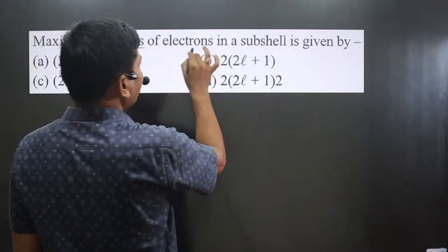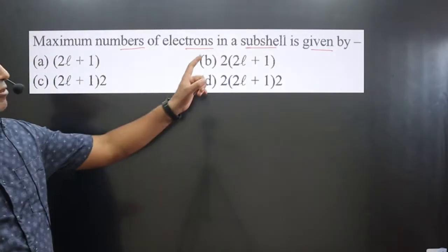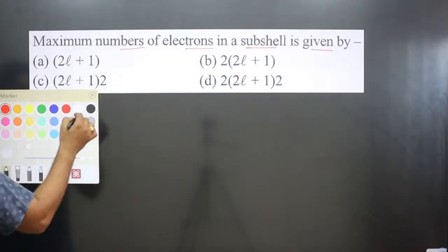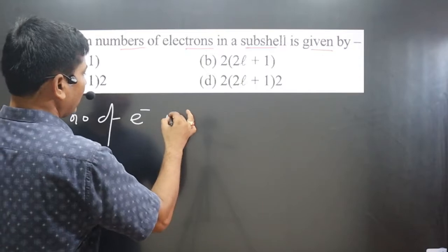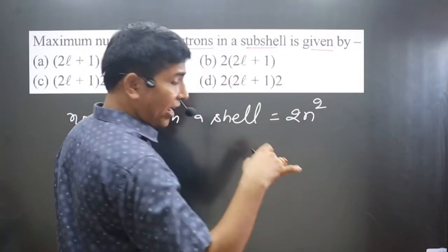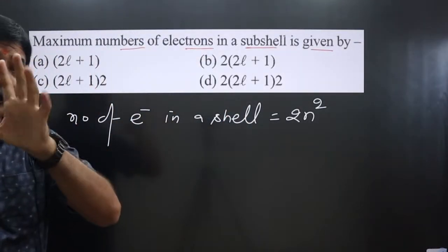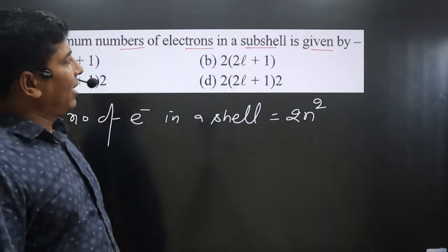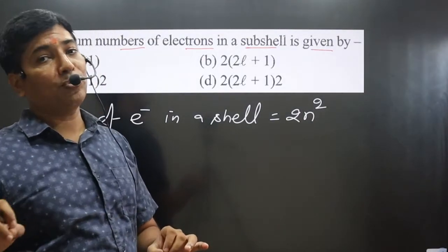The question asks for the maximum number of electrons in a subcell. We have to calculate the number of electrons in a subcell, not in a cell. The formula to calculate the number of electrons in a cell is 2n². If the n value is given, we can calculate the number of electrons in a cell. Here, it is asking about a subcell.